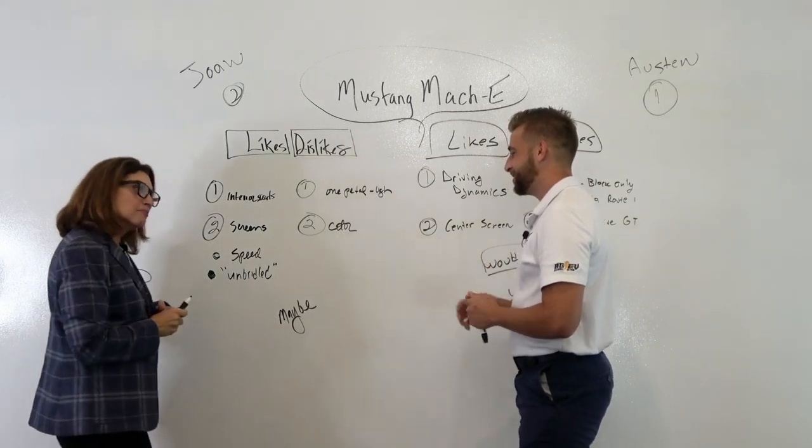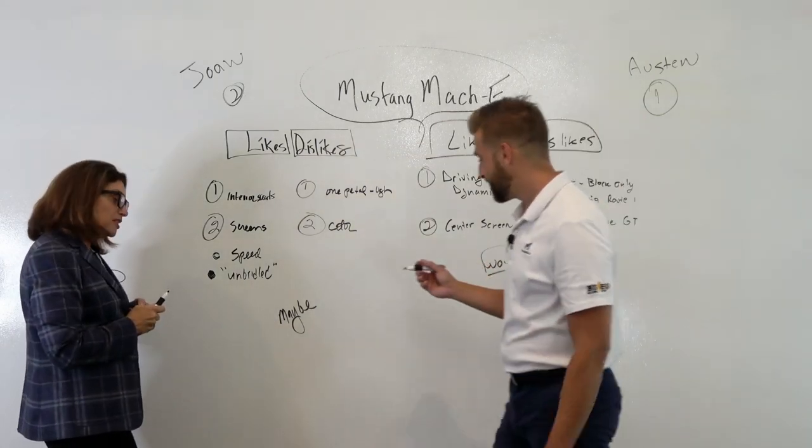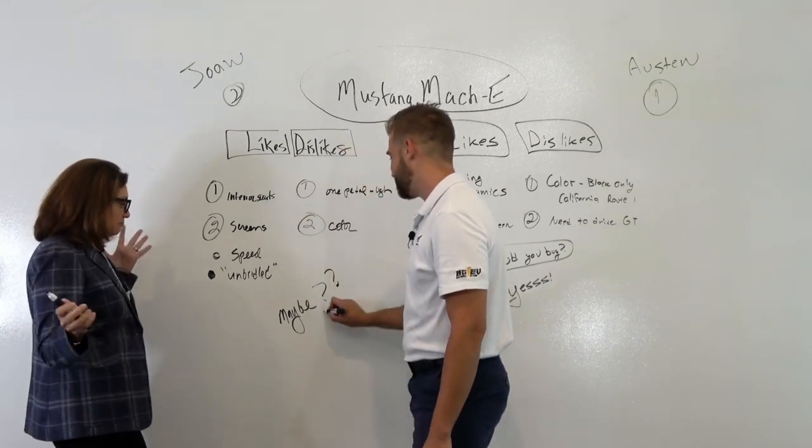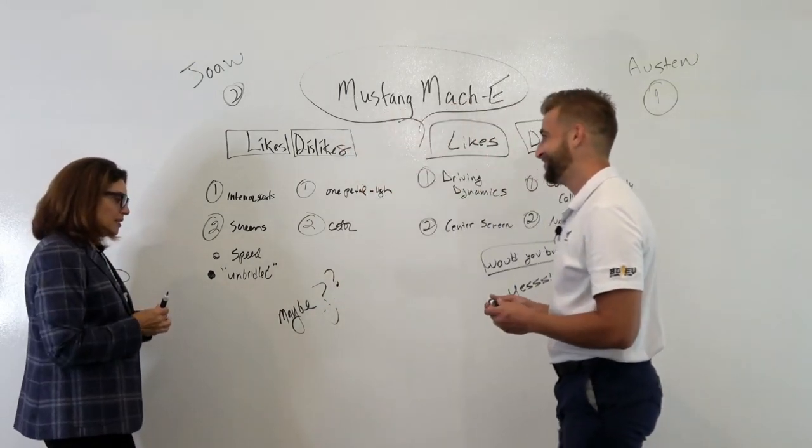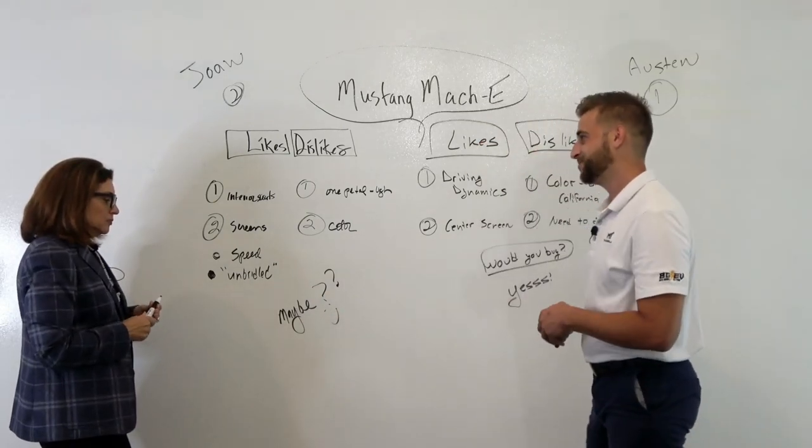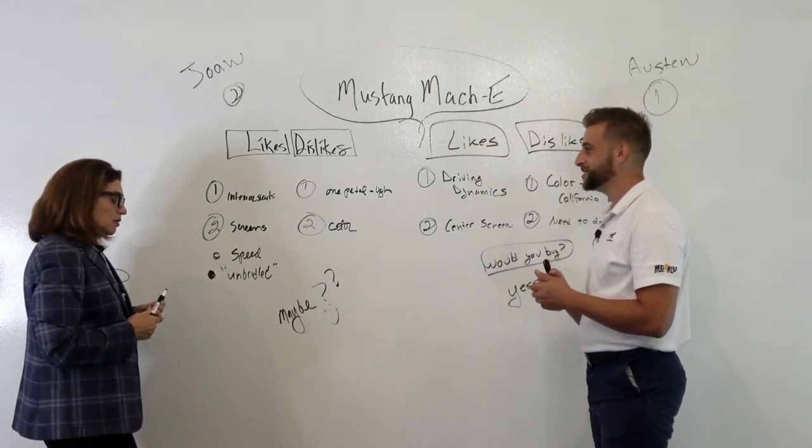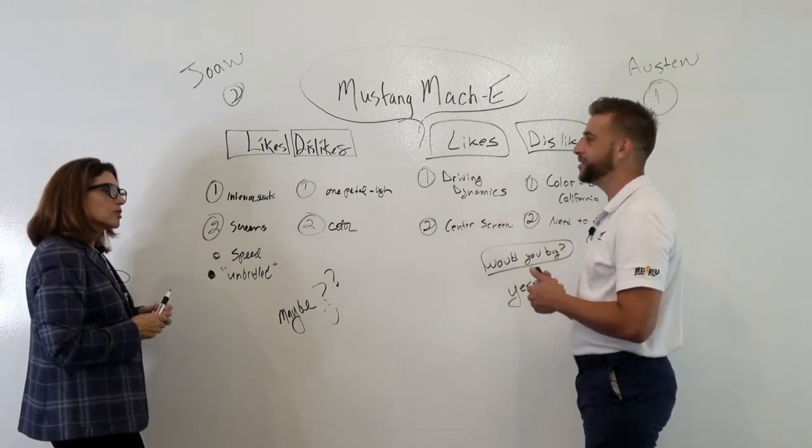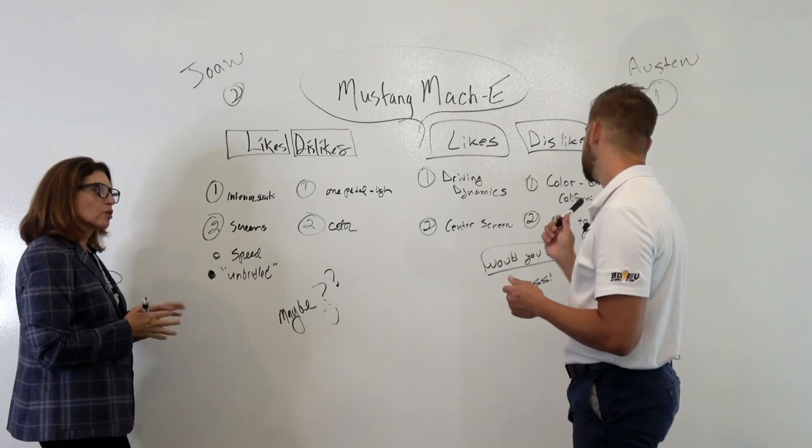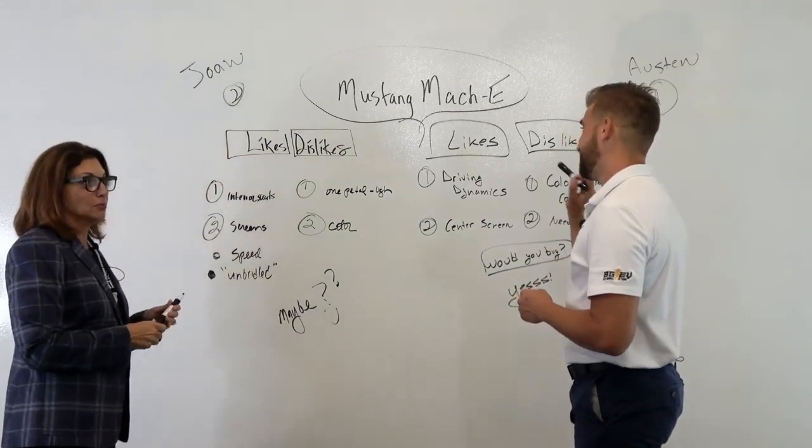So for me, it's a maybe. It's a strong maybe. So what would it take to make that a yes? Is the color? Possibly. The time I could get it. Tax credits, all those things. I'm looking at all of it.